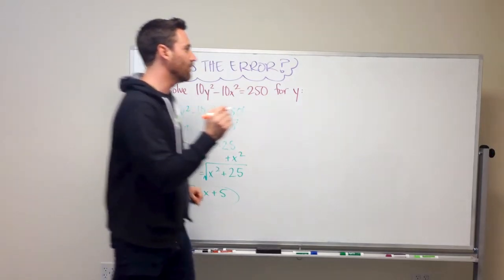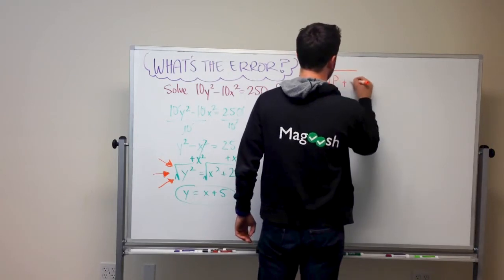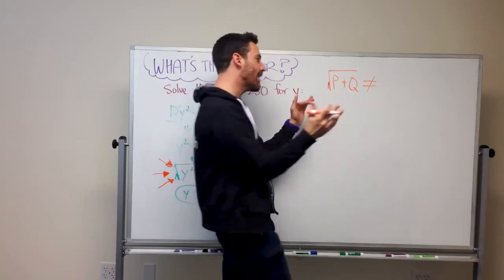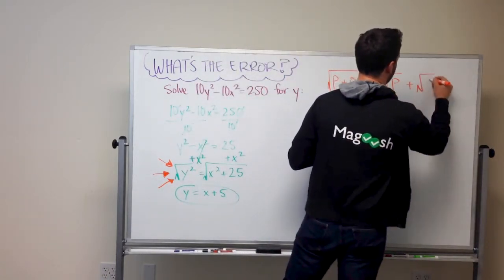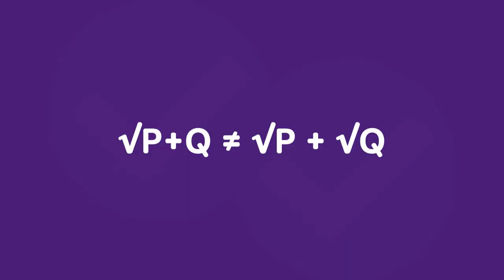So the rule is you cannot, cannot. So square root of p + q cannot do this. You just can't break it apart and take the square root of each individual item there. And that's what they did here.